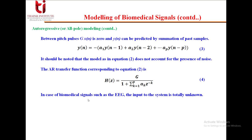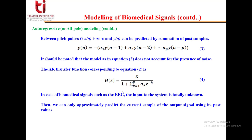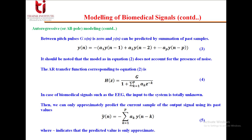In the case of biomedical signals like EEG, the input to the system is totally unknown. When the input is totally unknown, we can only approximate or predict the current sample of the output signal using its past values. The predicted value is given as ŷ(n) = -∑(k=1 to p) a_k · y(n-k), since x(n) is not taken into account.